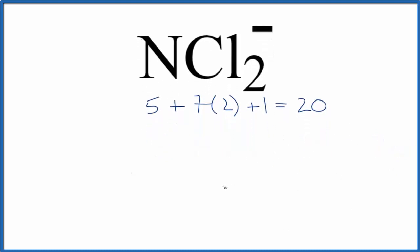So we put the least electronegative element in the center, that's the nitrogen, and then we'll put a chlorine atom on either side.